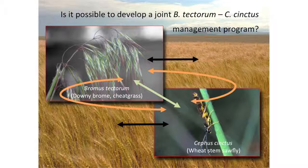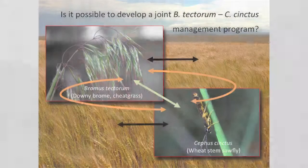We're trying to figure out how we make joint management recommendations, taking into account not just the direct interaction between the pest and the crop, but the indirect interaction that one pest has on the other group and through it on the crop — trying to maximize a solution. You need to find a trade-off; you cannot maximize both solutions, and depending on the relative abundance of the pest, that's where you make the pest recommendation.